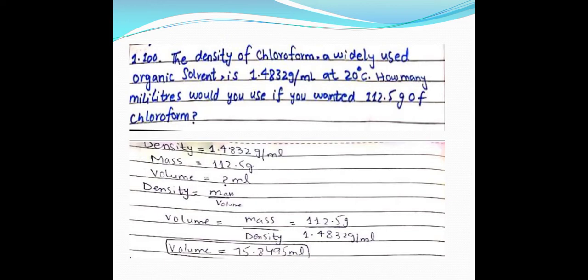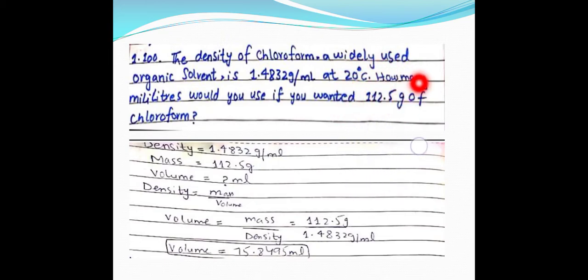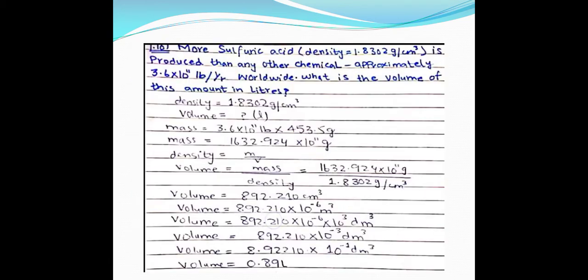For the density of chloroform, a widely-used organic solvent, with density 1.4832 g/mL: since milliliter is a unit of volume, the volume formula is V = mass / density. We substitute the given mass and density values to find the volume.